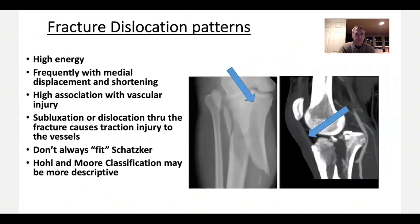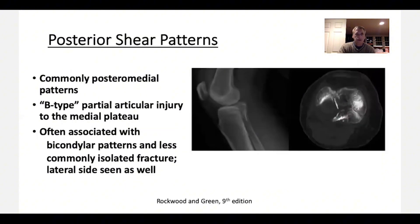The fracture dislocation patterns are very high energy, often associated with shortening and medial displacement. There are a lot of vascular injuries here. You also have to be concerned for subluxation through the fracture. These don't always fit a Schatzker classification — for example, a posterior shear on CT scan doesn't really fit into Schatzker's classification, and can come close to the posterior vessels. These high energy shear injuries are often posterior medial patterns and can also be associated with bicondylar patterns.